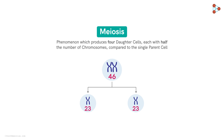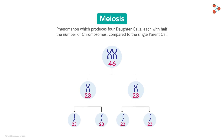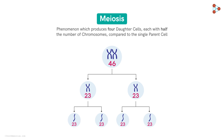Also, the chances of fertilization increase with a greater number of cells. Hence, instead of two, making four cells is preferable in nature. This is the reason why meiosis gives us four daughter cells with half the number of chromosomes.